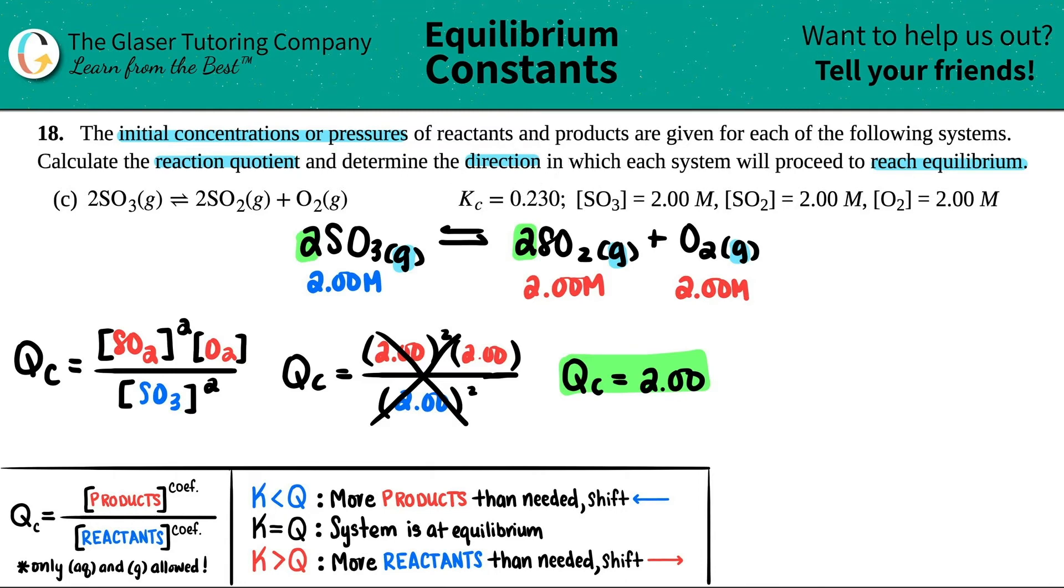Well, that comes from comparing the Q value with the KC value. Now, there's a trick, guys. If you want to use the trick, put the Q value on the right-hand side and the K value on the left-hand side. The Q that we just found out was 2.00 and the K was 0.230.